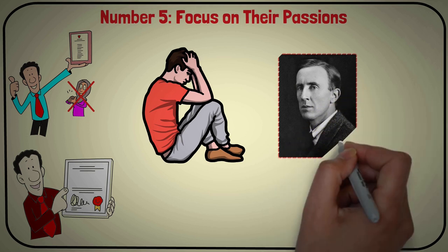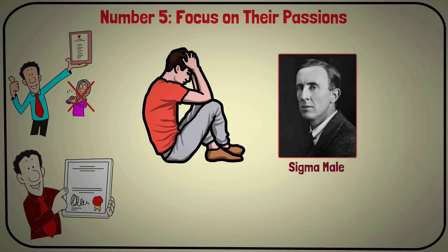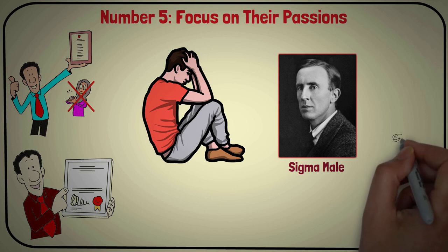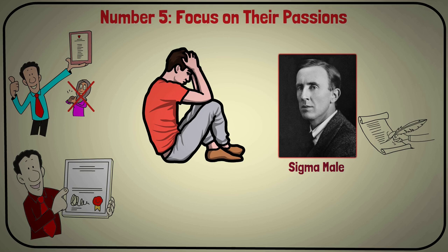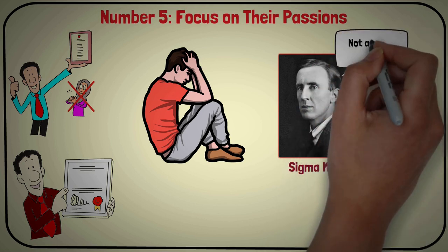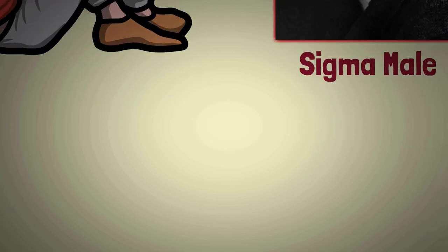Take the famous author J.R.R. Tolkien, for instance. He was a perfect example of Sigma male. An introvert, Tolkien used his passion for writing to create an entire world that inspired many generations. Yet he never sought public recognition for his work. His famous saying, Not all who wander are lost, speaks volumes about his solitary and introspective nature.